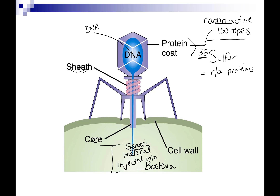For DNA, they used radioactive phosphorus, because DNA is made of a phosphate, sugar, and base. They could make the DNA radioactive and see where it goes. Since they couldn't visualize this under microscopes at the time, they measured where the radioactivity ended up.